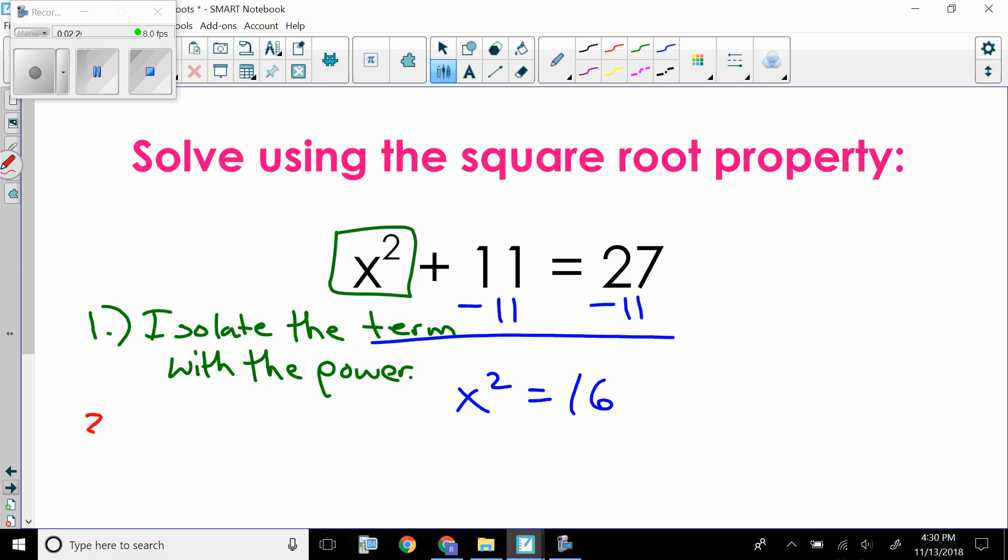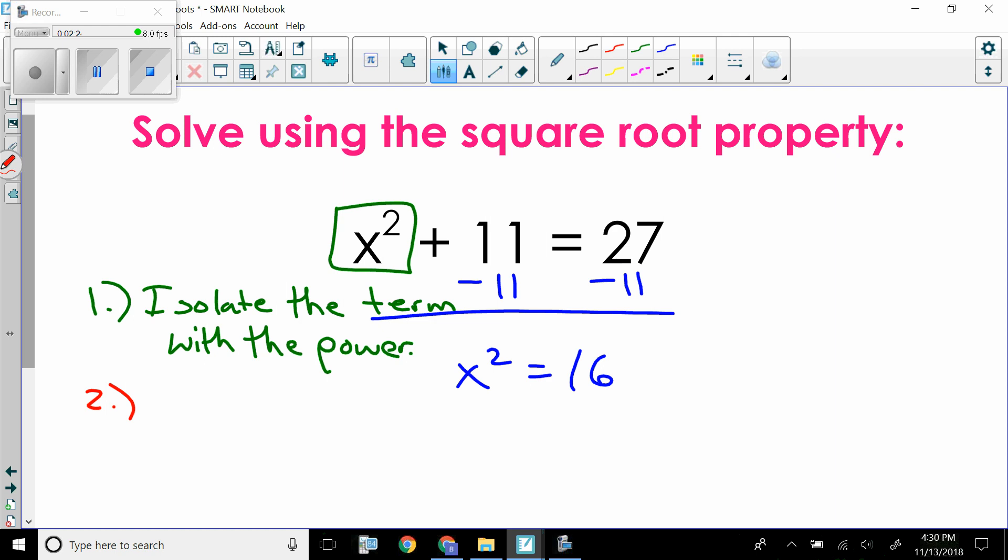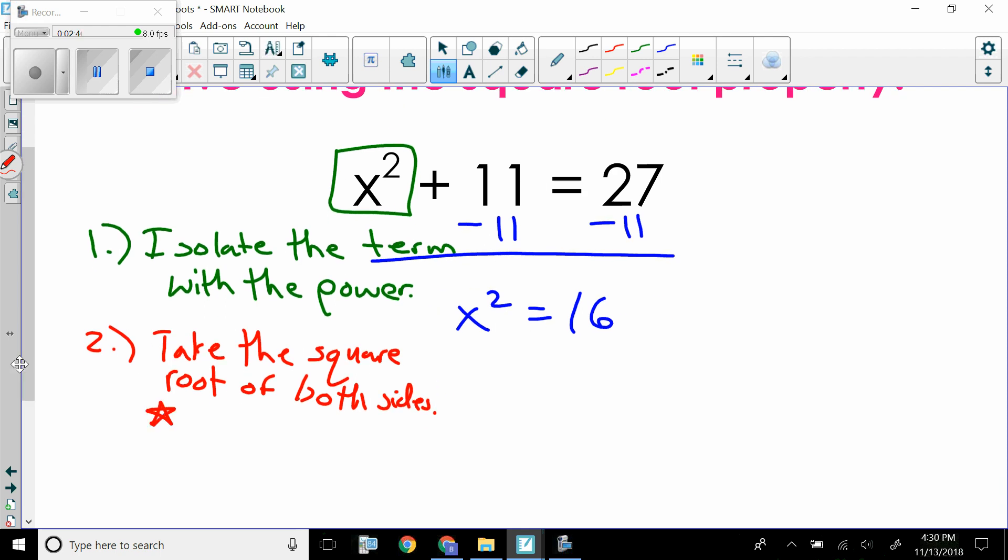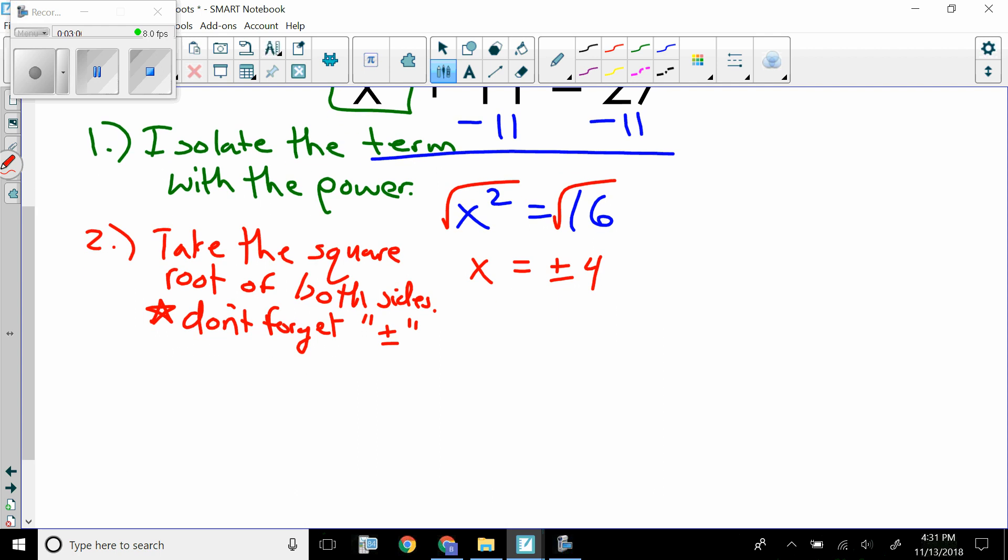That would be my first order of business, and then I would have x squared equals 16. Once I've done that, the second thing to do is to take the square root of both sides. And then I put a little asterisk here: don't forget the plus and minus.